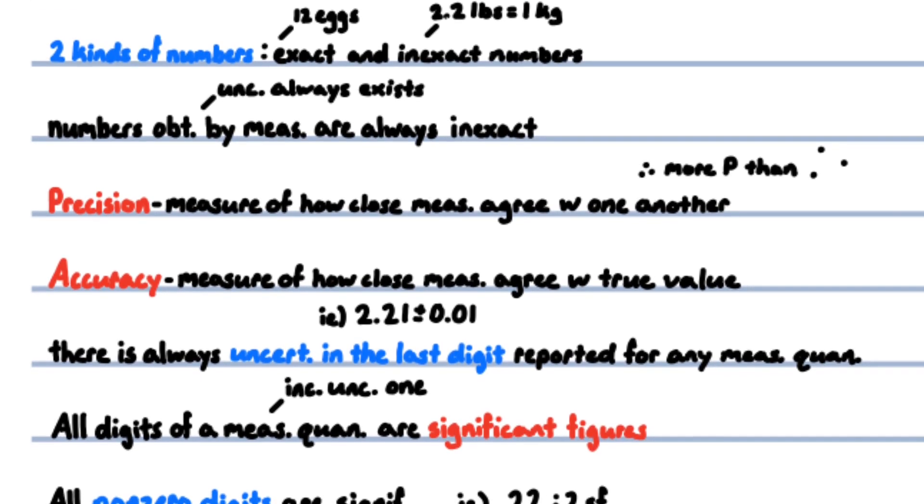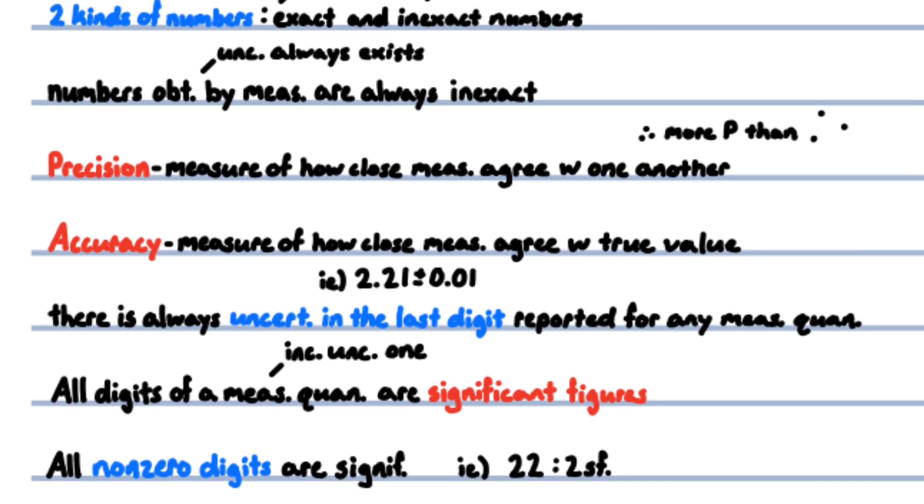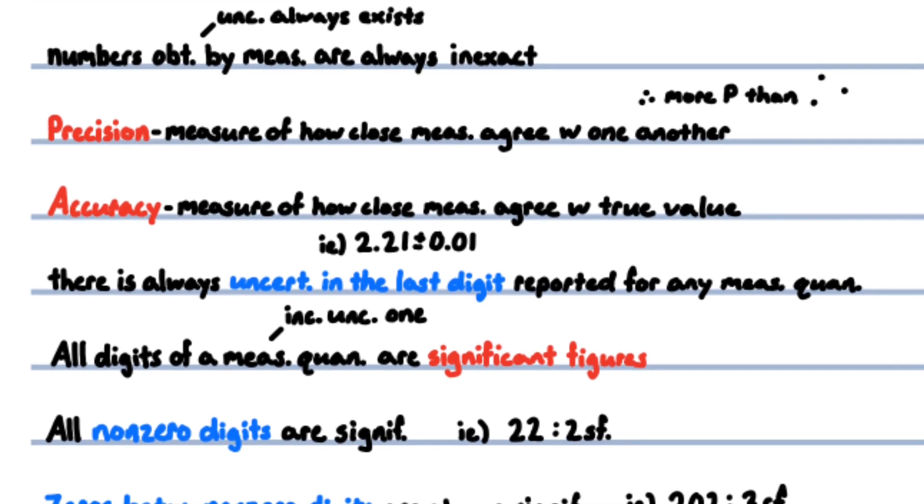Uncertainty in measurements: there are two kinds of numbers, exact and inexact. Numbers resulting from counting, for example, 12 eggs, are exact. Numbers that are approximate are inexact, such as 2.2 pounds in a kilogram or pi equals 3.14. Numbers obtained by measurement are always inexact. Uncertainty always exists due to equipment and human error.